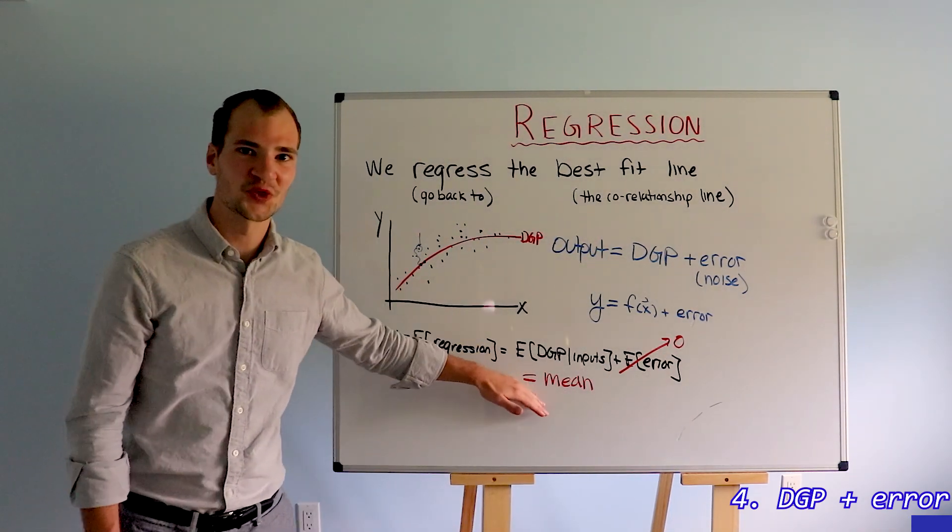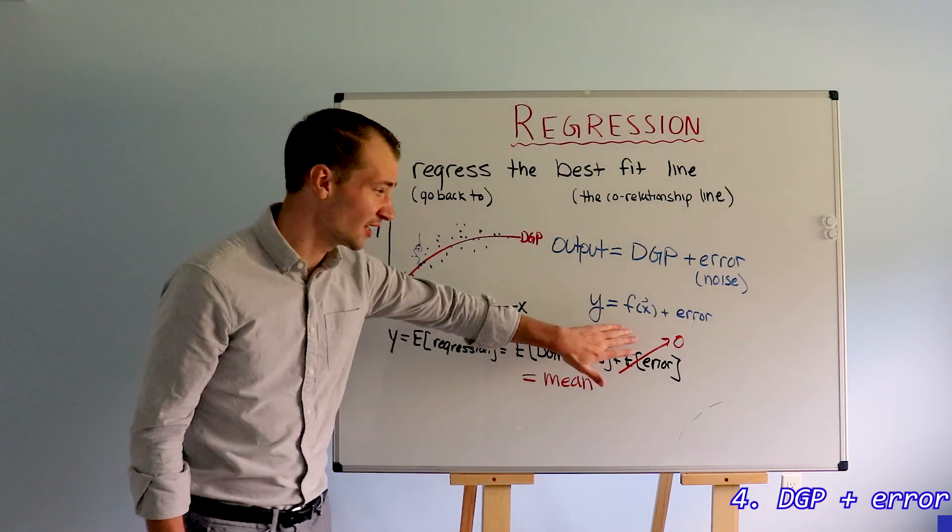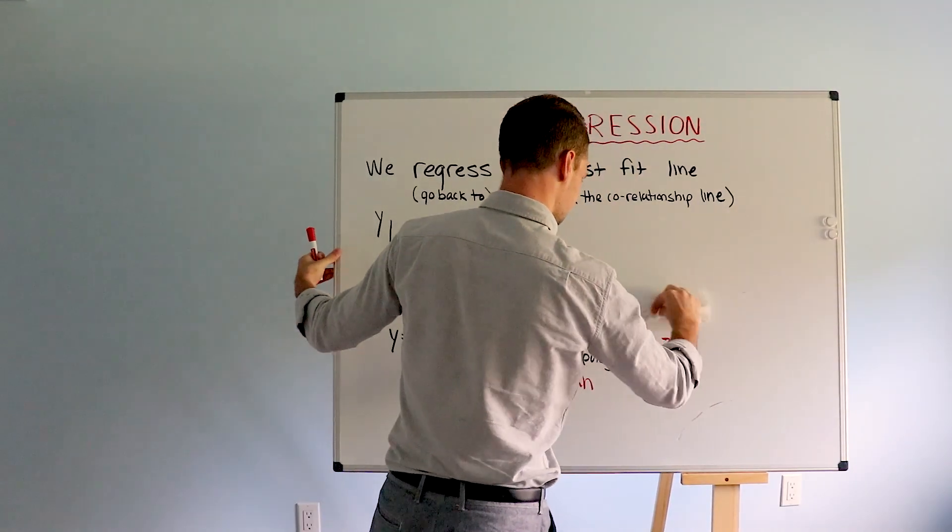So we regress to the mean unless there's an error. Now why are our errors centered on zero? Let's look at that.